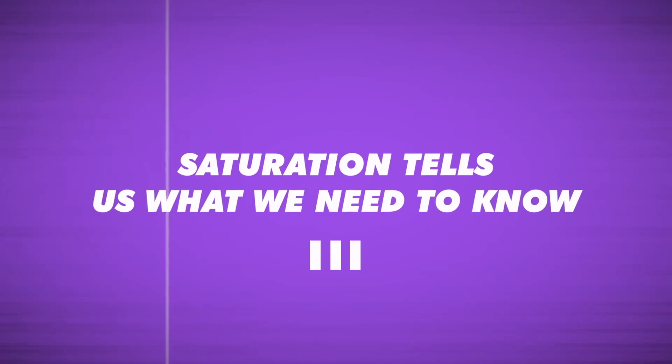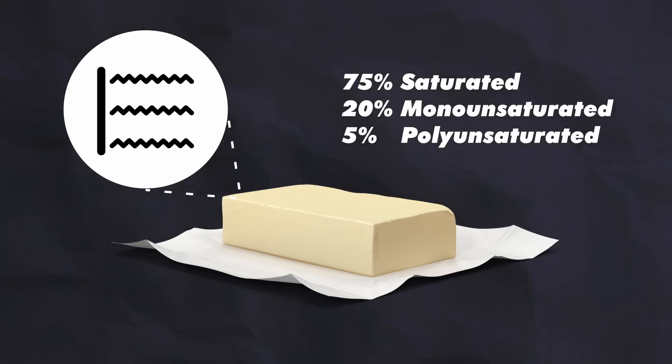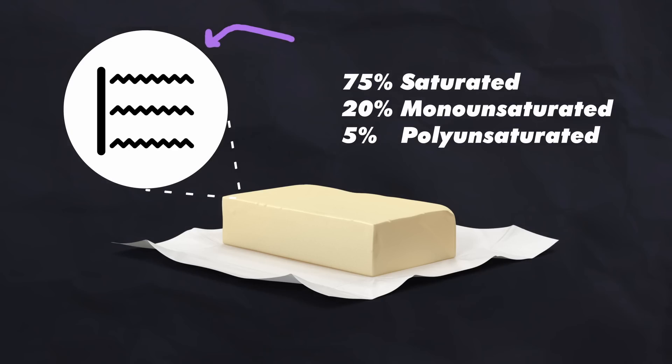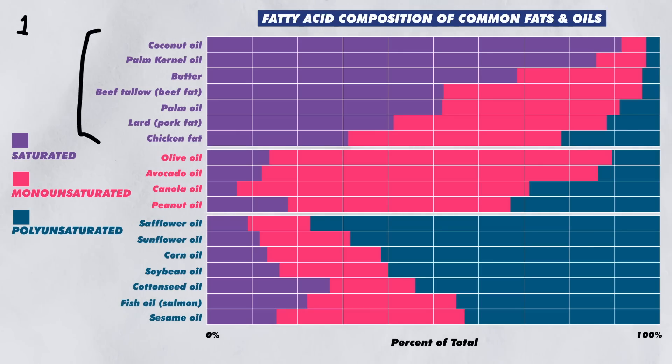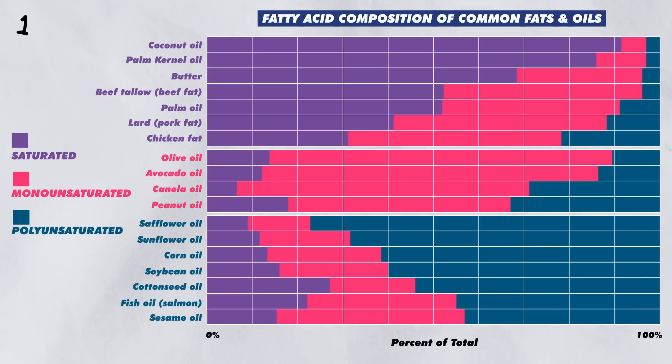Number three: the saturation of the triglycerides tells us most of what we need to know. The reason we call butter a saturated fat is that if we look into the triglycerides that make up butter, we'd see the majority of the individual fatty acids are saturated. This is the case for a lot of fats that are solid at room temperature — they have a ton of saturated triglycerides. Looking at this chart, this tends to be animal-sourced fats, and we can see coconut oil on here too — packed with saturated fats. All three types of fatty acids are present in each fat, just in different amounts.